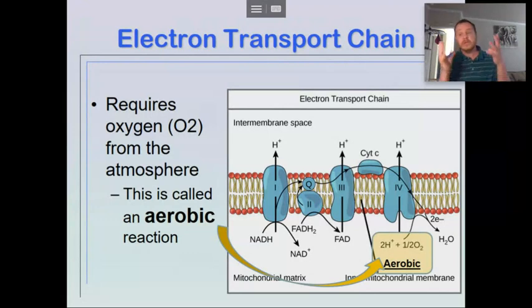So anaerobic is where we don't need oxygen. This part of the process, the electron transport chain, we incorporate oxygen our bodies pull in from the atmosphere and diffuse into our cells so it can make its way into the mitochondria. The mitochondria needs that oxygen to actually carry out this process.